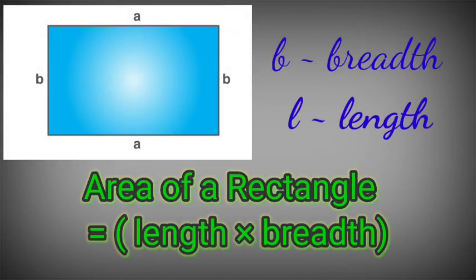To find the area of a rectangle, we need to measure the length and the breadth, and multiply them together to get the area. For a triangle, the base and perpendicular height must be known. The area can be found using the formula: area is equal to half of base into height.